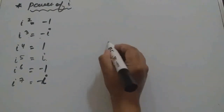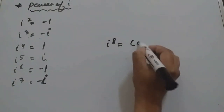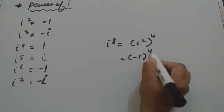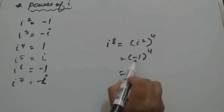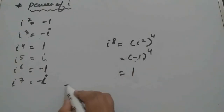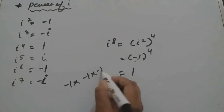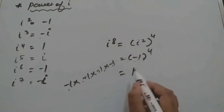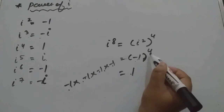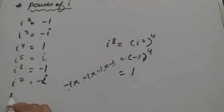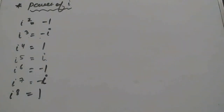For i to the power 8: we can write i squared to the power 4, which is minus 1 to the power 4. Since the number is negative and the power is even, the answer is positive — so i to the power 8 equals 1. One pattern we can observe: the values cycle through i, minus 1, minus i, 1.